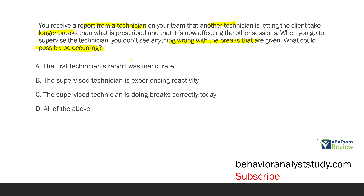Answer A: the first technician's report was inaccurate — totally possible, but we shouldn't jump to that conclusion without more information. Answer B: the supervised technician is experiencing your reactivity — also possible; when you show up, the technician who was allegedly providing the wrong breaks now does what they're supposed to do. Answer C: the supervised technician is doing breaks correctly today — maybe just by chance, breaks are correct on that day. All three are options. How would you determine what's really going on? More data, more supervision — collect data, supervise, and use those observations to make decisions. So what could possibly be occurring? Answer D: all of the above.